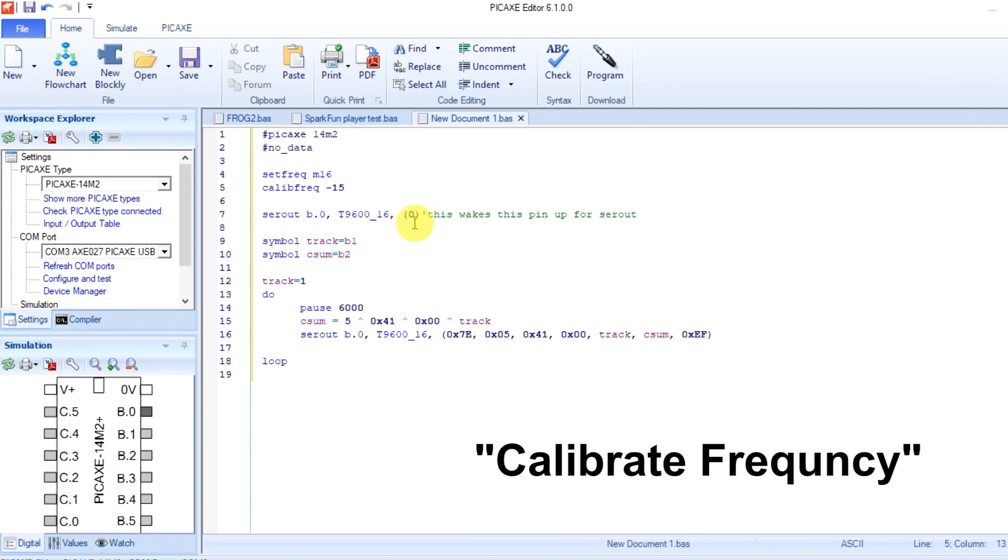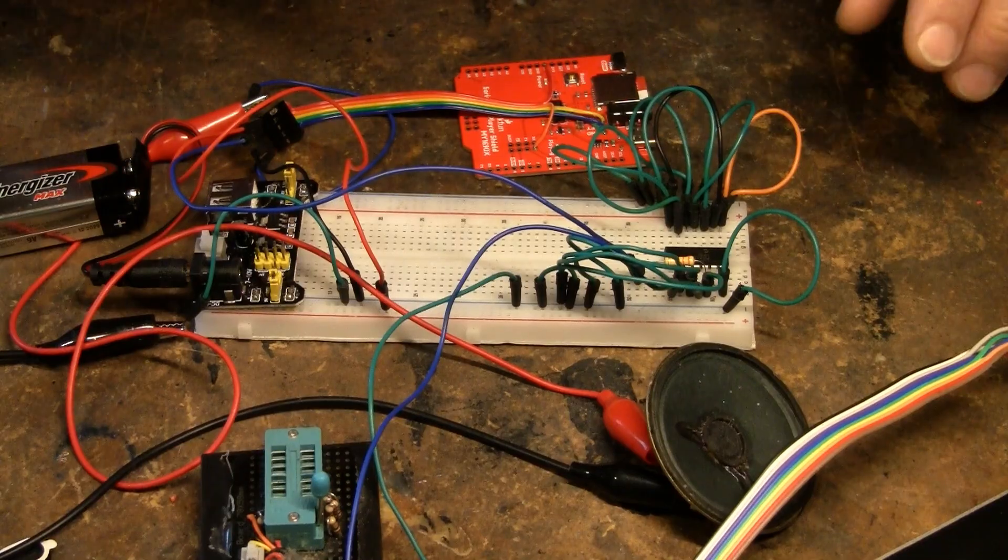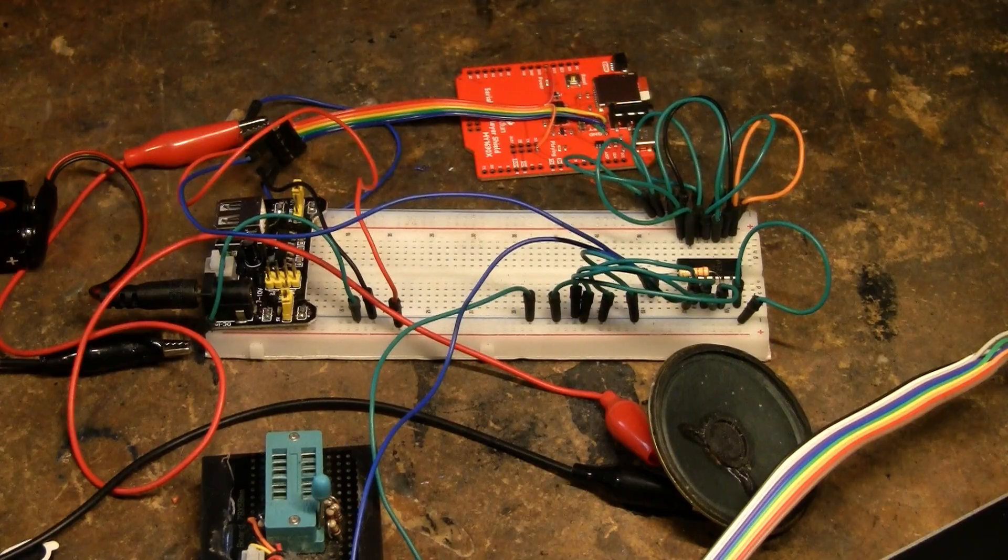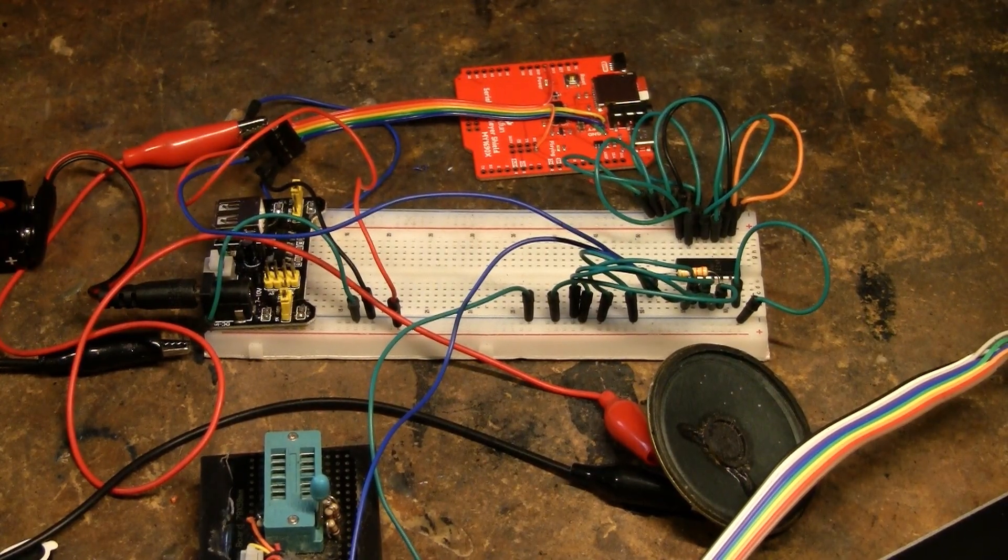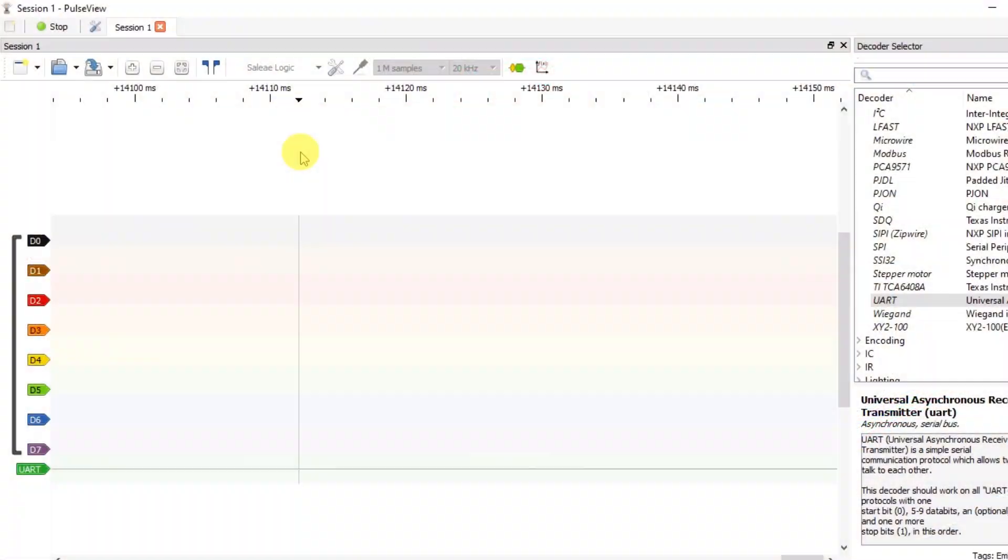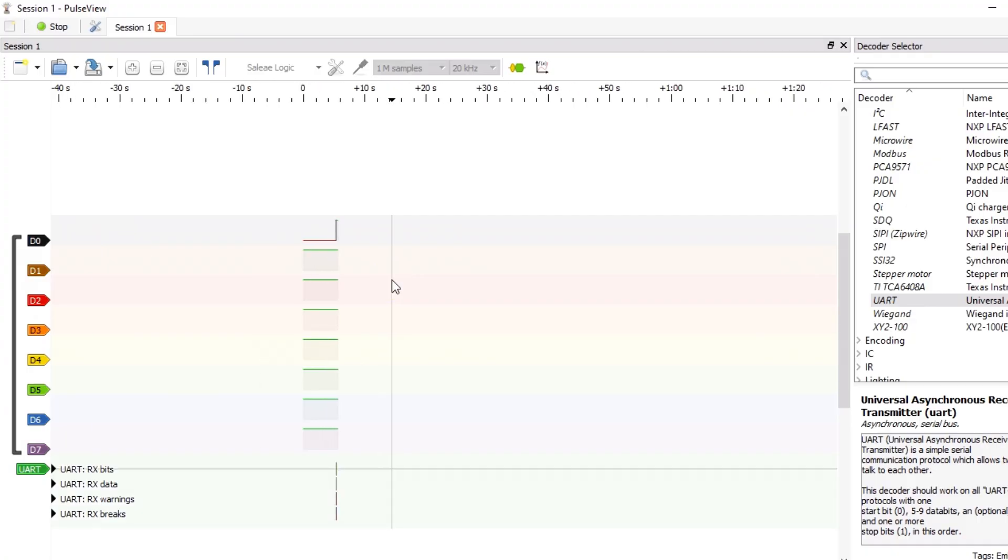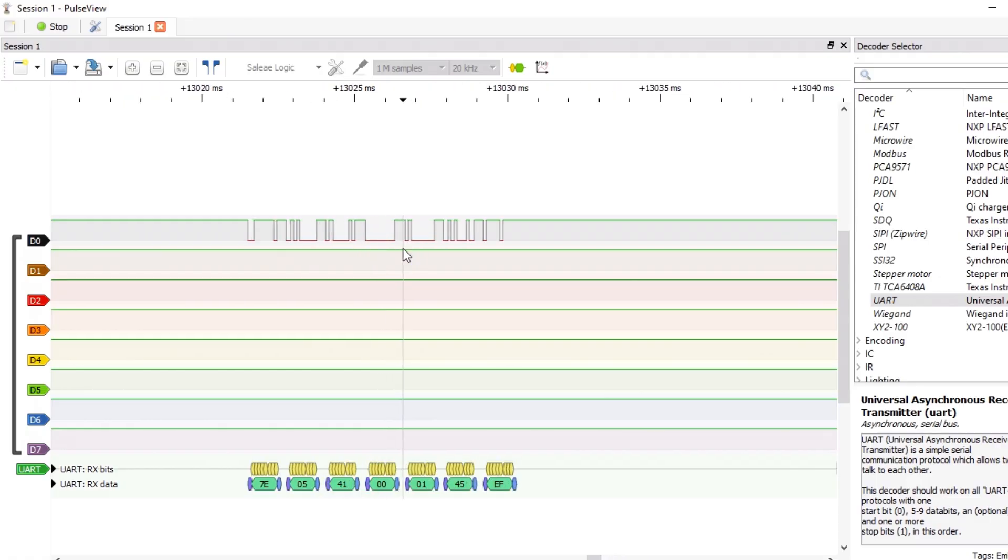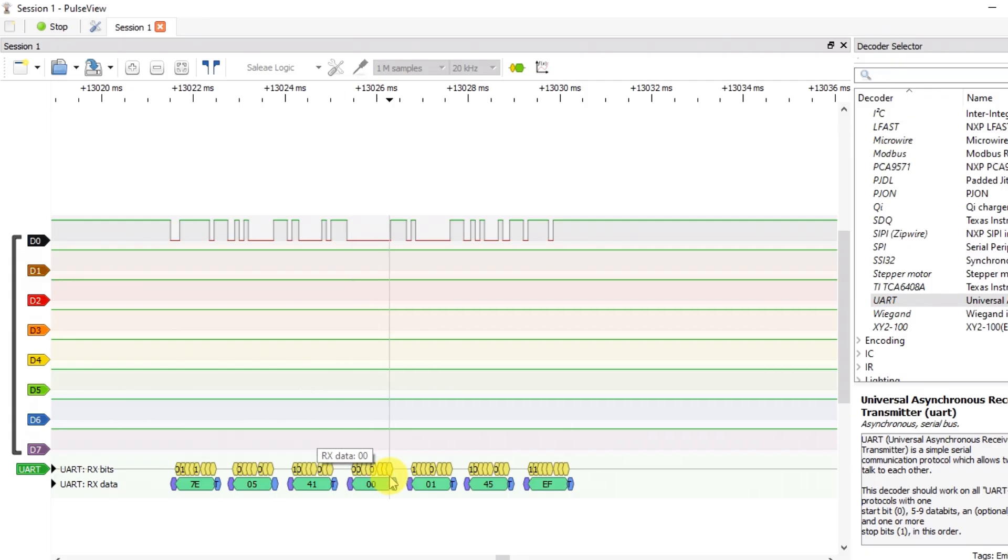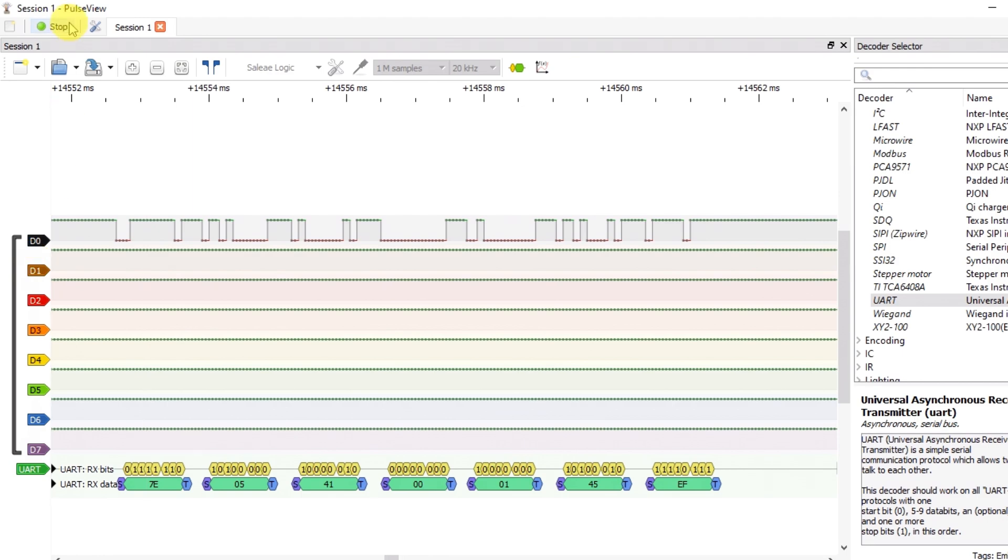I found a good CalibFreq minus 15. That should do it. Some of them are more finicky than others. But this seems to be pretty good. So, okay, so that's with the calibration. That should be everything. So if I look at the pulse view here. Now we can run it. Turn it on. Well first of all there's frogs playing now. Every three seconds. And if we look at one of these codes.